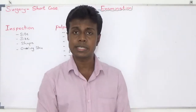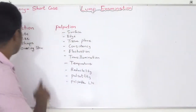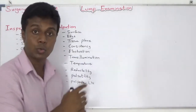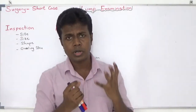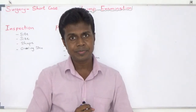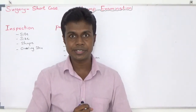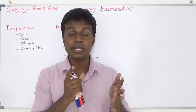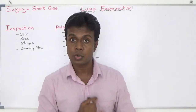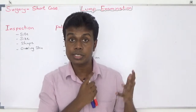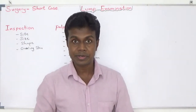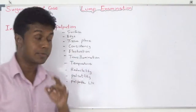What are the things you are going to see in inspection? First, number one: site. Where is it situated? If you found a lump in the neck region, it is very unlikely to be testicular. So site is very important - most probably it can be thyroid pathology, thyroglossal cyst, or cystic hygroma.